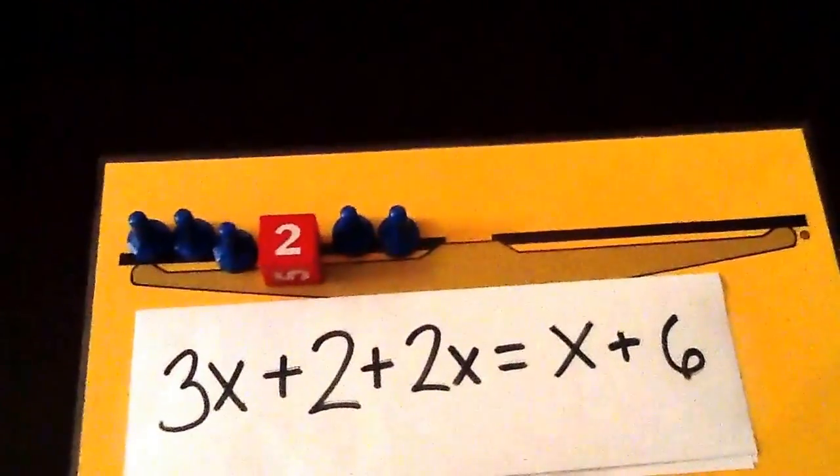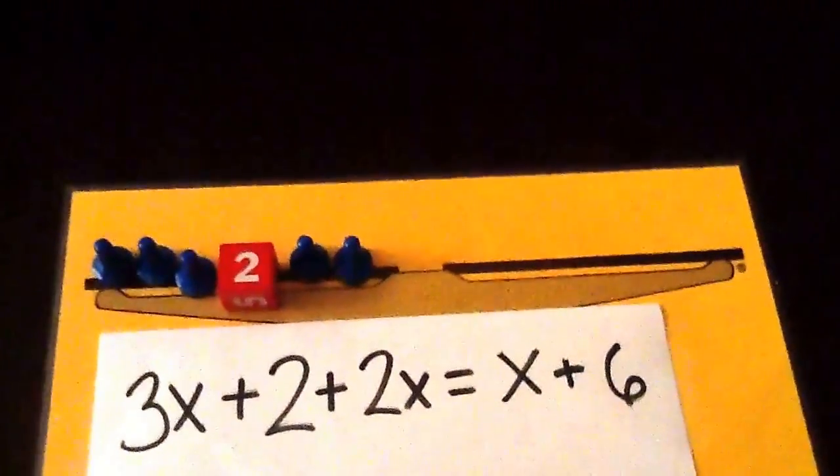On the right, we have an x plus 6. So we need 1 more x and a 6.